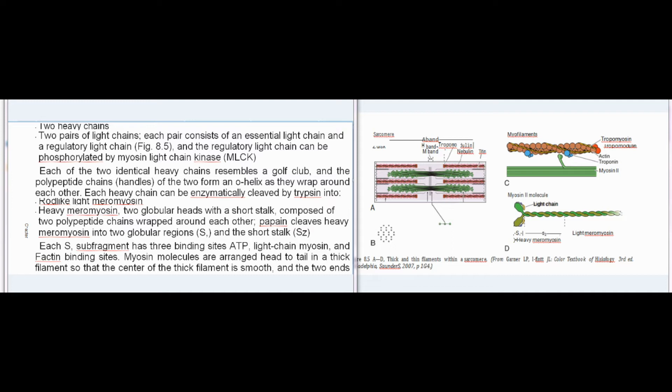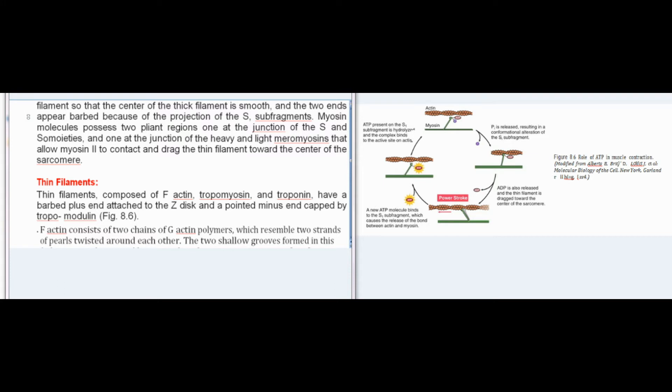Each heavy chain can be enzymatically cleaved by trypsin into rod-like light meromyosin and heavy meromyosin — two globular heads with a short stalk. Papain cleaves heavy meromyosin into two globular regions, S1, and the short stalk, S2. Each S1 subfragment has three binding sites: ATP, light chain myosin, and F-actin binding sites. Myosin molecules are arranged head to tail in a thick filament so that the center of the thick filament is smooth and the two ends appear barbed because of the projection of the S1 subfragments. Myosin molecules possess two pliant regions that allow myosin-2 to contact and drag the thin filament toward the center of the sarcomere.